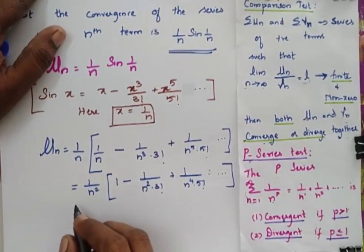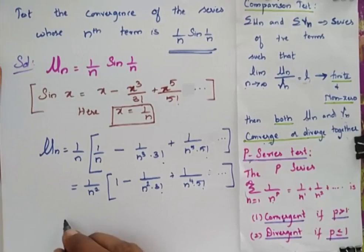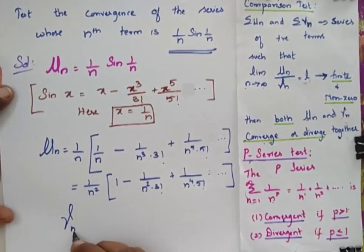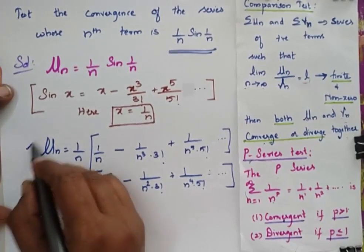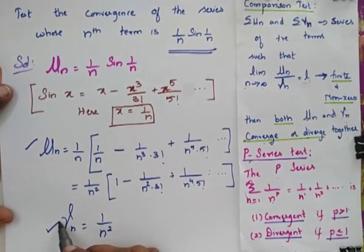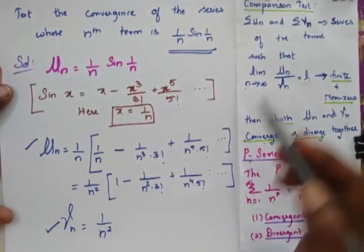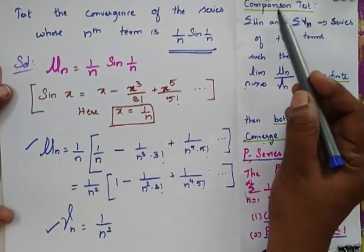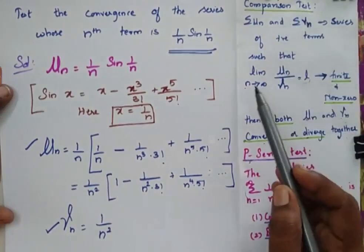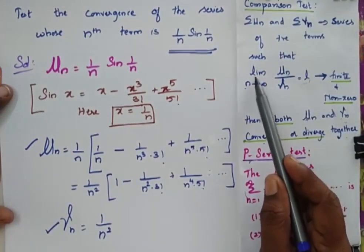Taking 1/n² as a common factor outside, we get u_n = (1/n²)[1 - 1/(n²·3!) + 1/(n⁴·5!) + ...]. Now we consider v_n = 1/n², and we apply the comparison test.